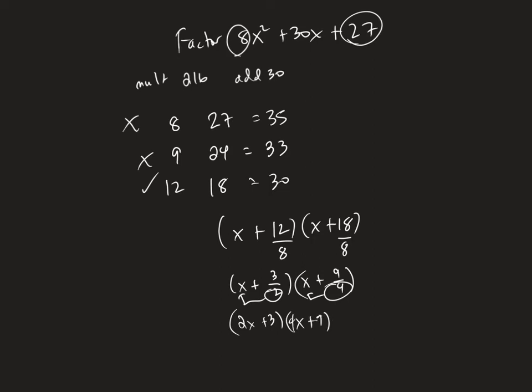Now I'm going to do this by the box to check and make sure that was right. So let's see. My two numbers were 12 and 18: 8x² and 12x. There's a 4 between the 8 and the 12, and an x between the x² and the x.